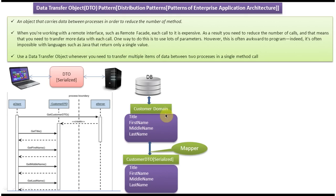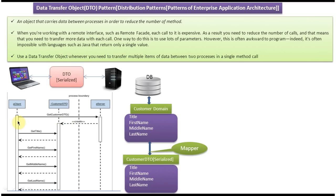Once the server gets this customer domain object, the server will use the mapper. The work of the mapper is to read the customer domain object and convert it to the customer DTO — reading title, first name, middle name, and last name and formulating the customer DTO object. Once the server formulates this customer DTO object, the server will return the customer DTO object to the client.